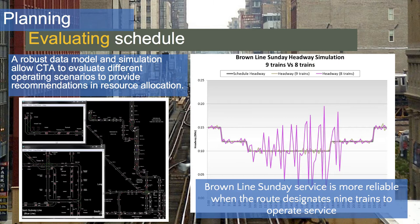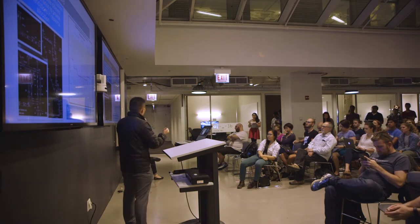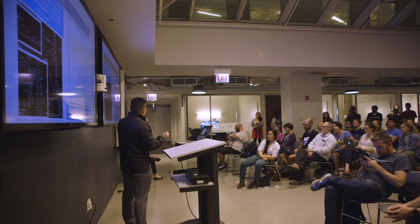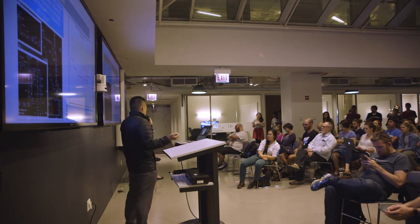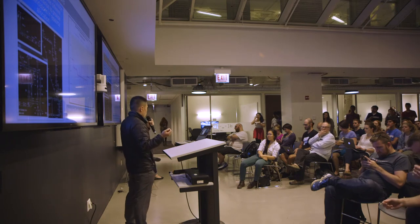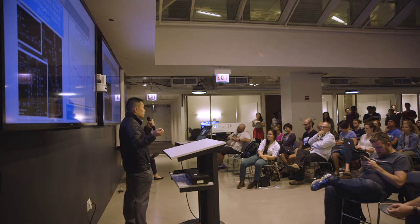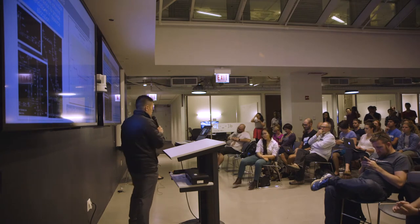You can see the headway fluctuates much more with the eight-train schedule than the nine-train schedule. From this analysis, I know I'm really pushing it if I use eight trains for the Brown Line Sunday schedule. We try to repeat this process for all lines and all day types every time we renew a schedule. By having good data and a simulation tool with thorough analysis, we can effectively do resource allocation to make better decisions — ensuring the lines get just enough resources to operate service and stay on budget.